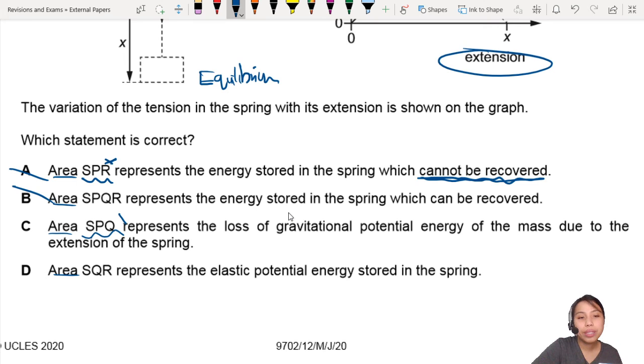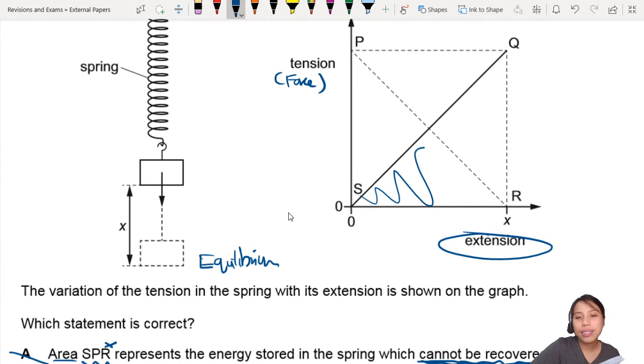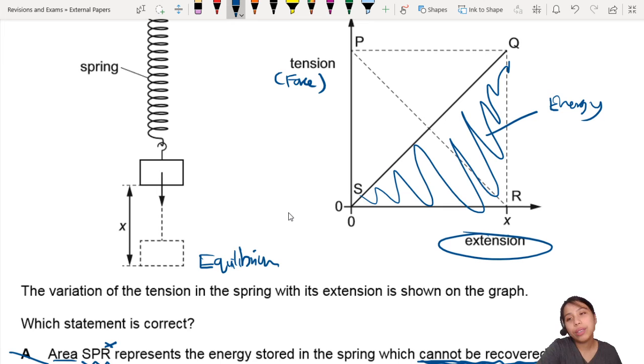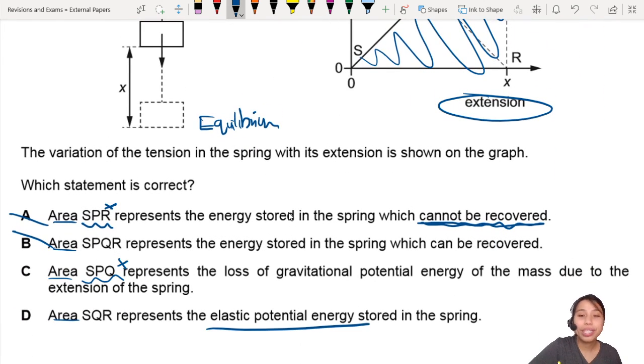Let's leave the last one: Area SQR is elastic potential energy stored in the spring. So this, ah yes, this one is energy stored in the spring. Recoverable or not, I really don't know - it depends whether the spring is spoiled or not. But yes, we do know it's the elastic potential energy stored, so this is the best choice.